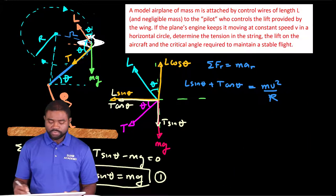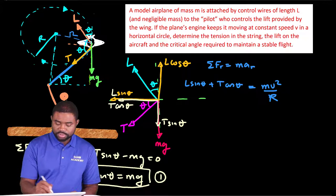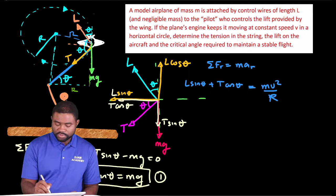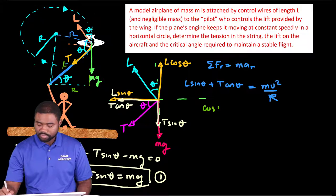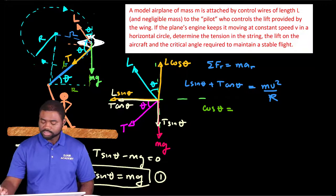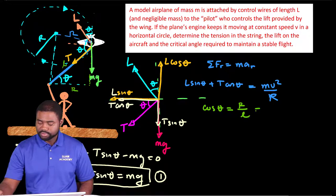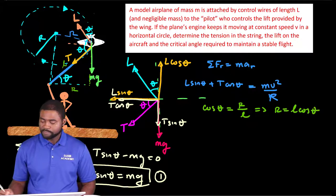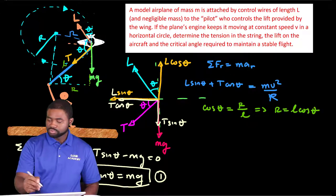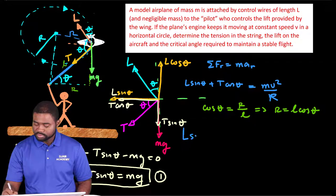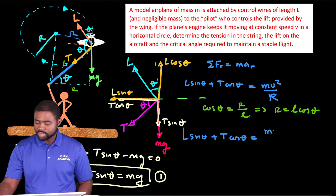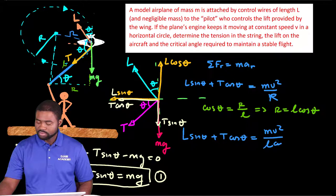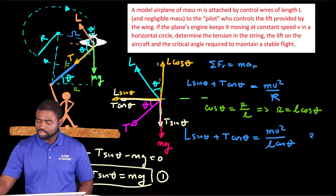Now, if you notice, we can complete this triangle. You will have here, this is R. The length of the string is L. And cosine theta is equal to adjacent R divided by L. This means that R is equal to L cosine theta. And if that is true, so we will have here L sine theta plus T cosine theta equal to MV squared divided by L cosine theta. Let us call this equation 2.